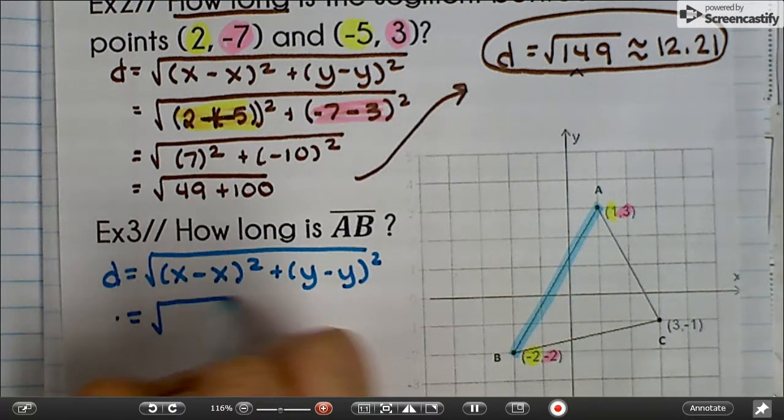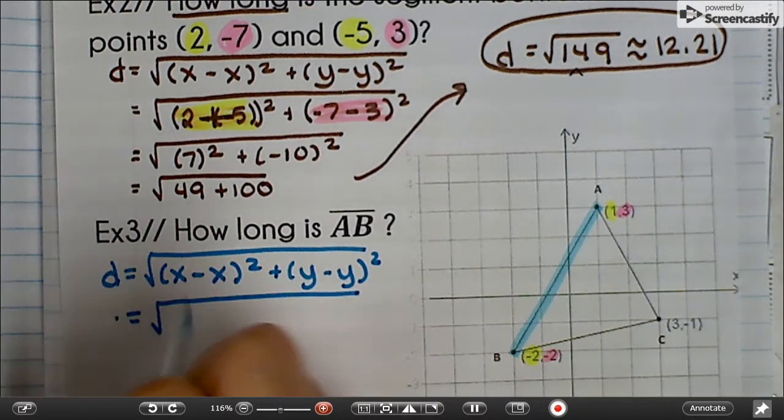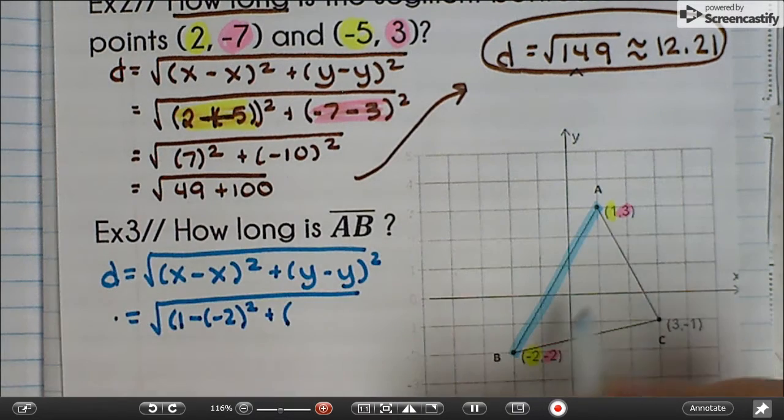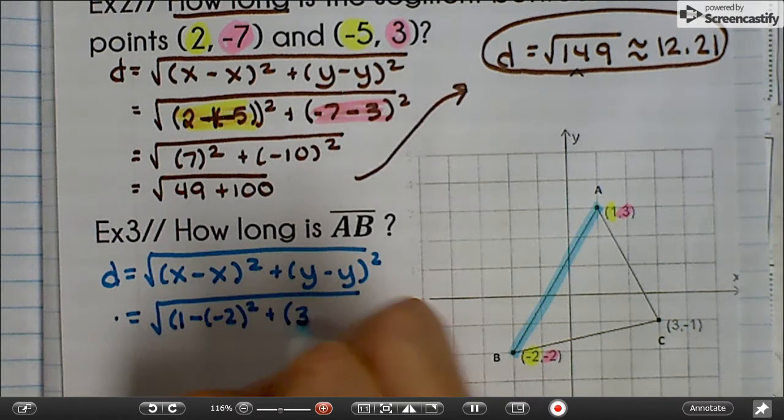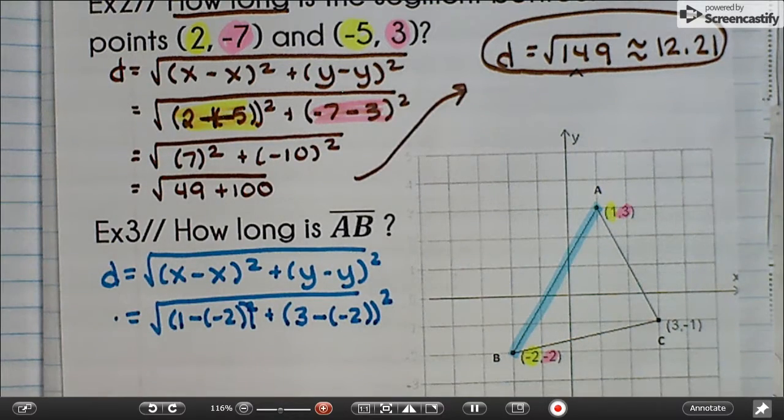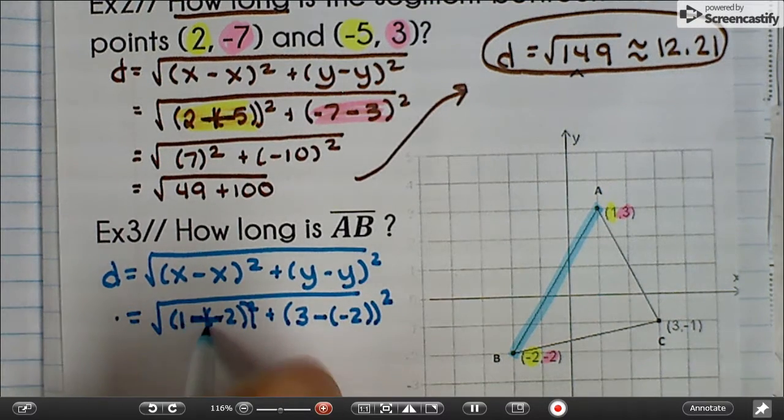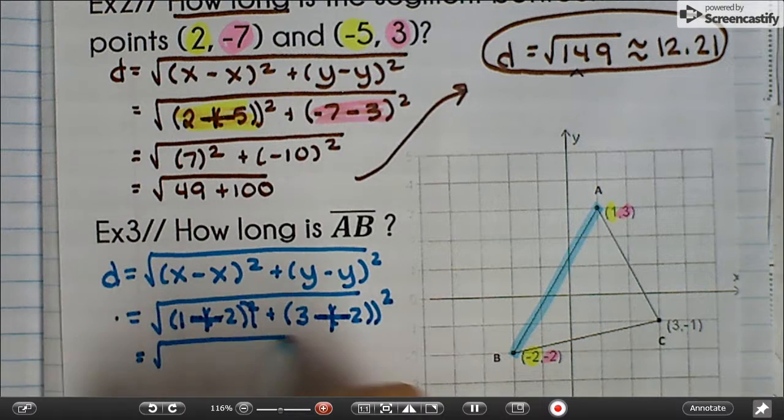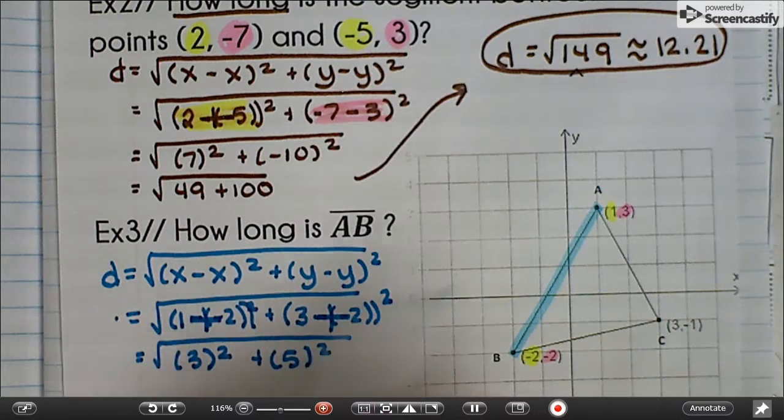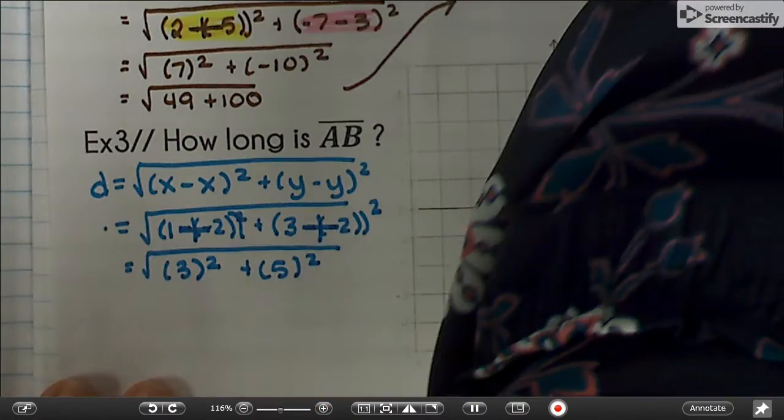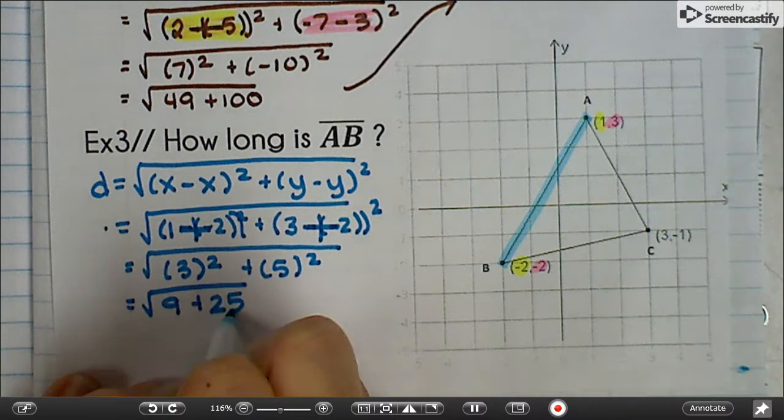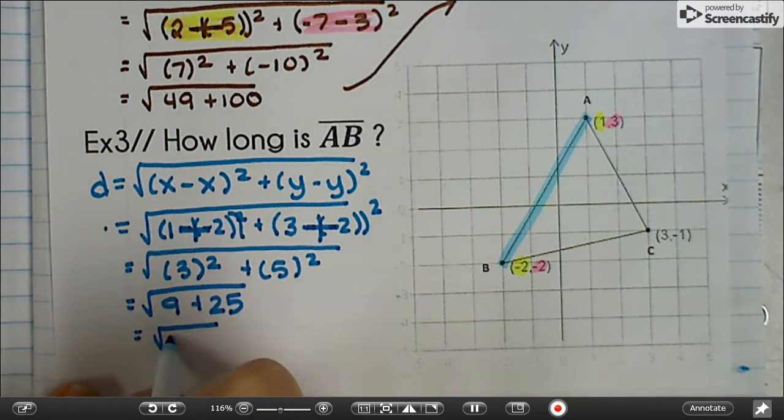So our x's are 1 and negative 2. So 1 minus negative 2 squared plus the y's, 3 and negative 2. 3 minus negative 2 squared. Minus a negative changes to a positive. So we have 3 squared plus 5 squared. So 9 plus 25.